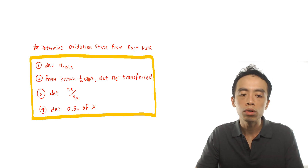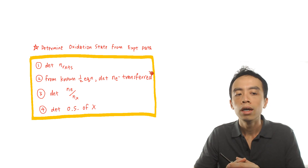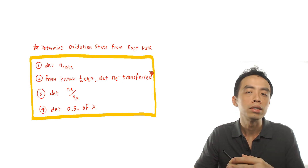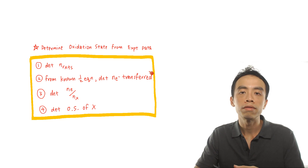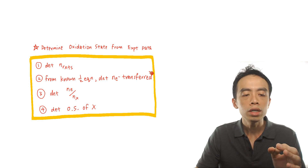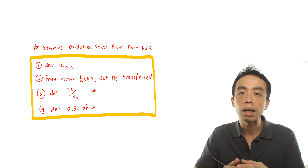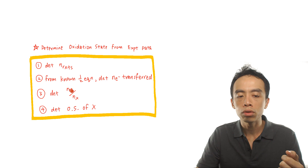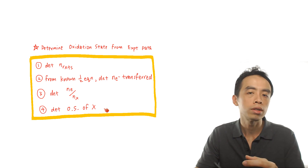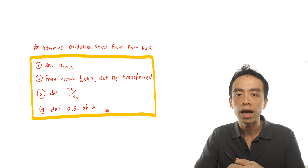Step two — the most important step — is to use the known half-equation to determine the number of moles of electrons transferred. Step three: determine the ratio of moles of electrons to moles of the unknown species. Step four: from this mole ratio, determine the change in oxidation state of the unknown, and from there determine the actual oxidation state.